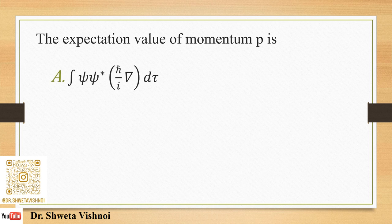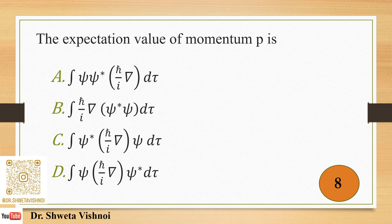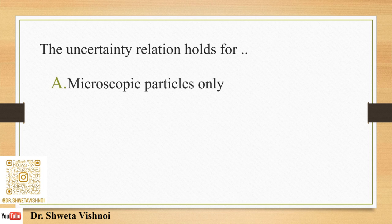Expectation value of momentum. Time has started. From the expression, it is clear that the momentum operator has value h_cross/i · del. If you didn't remember that, note it down. When we calculate the expectation value, we place the operator between ψ* and ψ. The correct option is C.